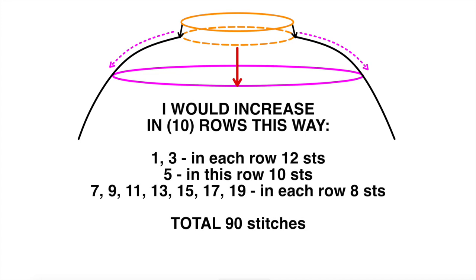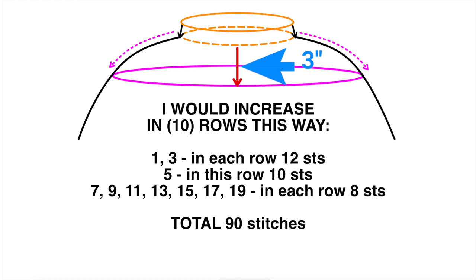My increase rows would be every other row: row 1, then 3, 5, 7, and so on. I would make the majority of my increases at the beginning. In rows 1 and 3, I'd increase by 12 stitches instead of the normal 8 for a raglan sweater. In row 5, I'd increase by 10 stitches. Then every other row I'd increase by 8. Playing with all the numbers, that gets me to a total increase of 90 stitches over 3 inches or 20 rows.